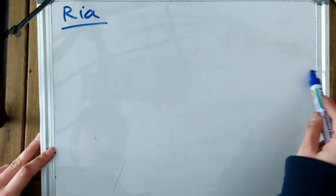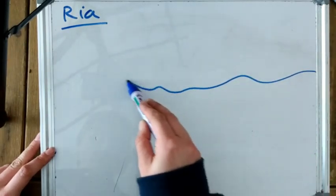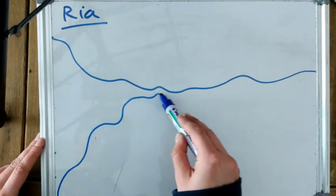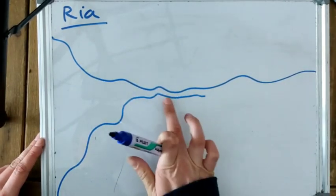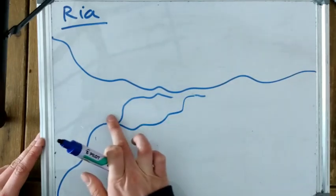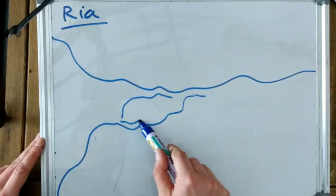So one submergent landform is a ria, which is a submerged river valley. It's basically a type of estuary.